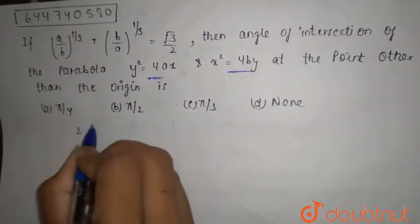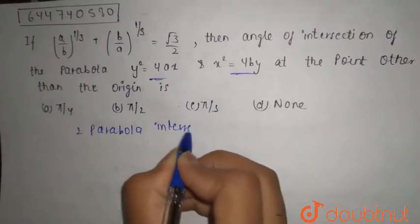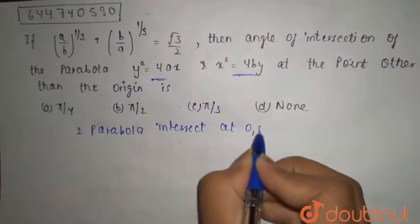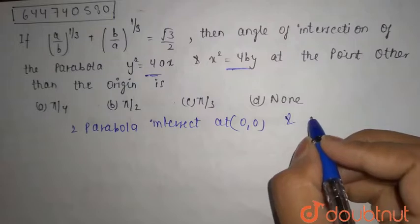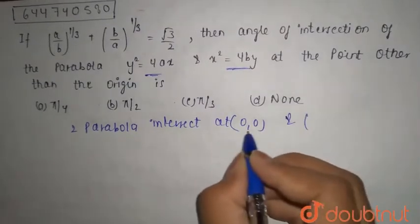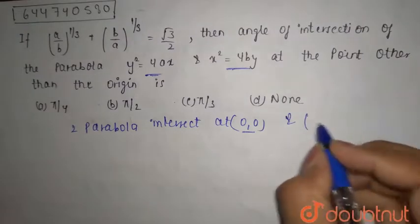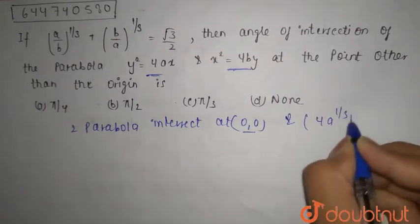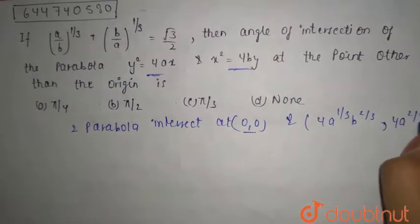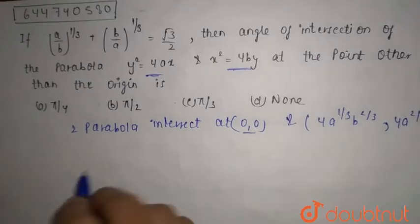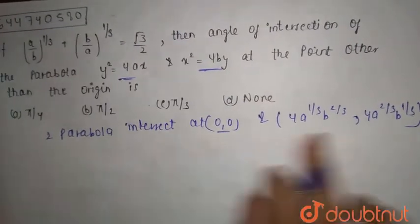The two parabolas intersect at (0, 0). The other point of intersection P is (4a^(1/3)·b^(2/3), 4a^(2/3)·b^(1/3)). So the two parabolas intersect at the origin and at this point P.